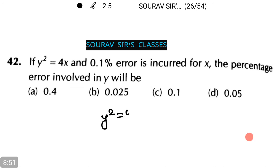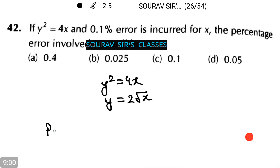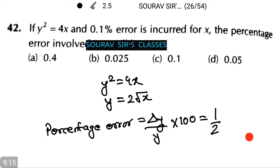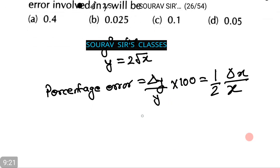We are given y² equals to 4x. Therefore y equals to 2√x. Therefore the percentage error equals to Δy by y into 100 equals half Δx by x. Now putting in the values we have half into 0.1 percent which is equal to 0.05 percent. Thus option number D is the correct answer.